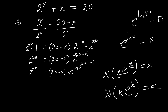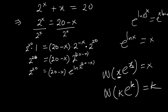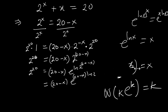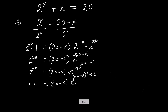Now applying the identity e^(ln(box))^X equals e^(X·ln(box)), I can rewrite this. So we have (20 minus X) times e^((20−X)·ln 2). This is applying the power rule, so the exponent becomes (20−X)·ln 2.